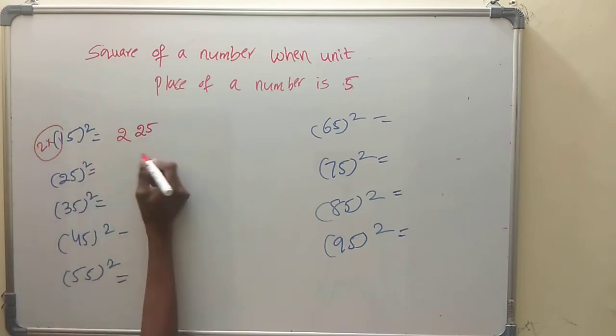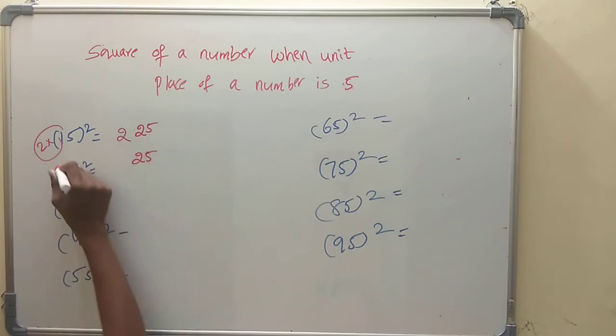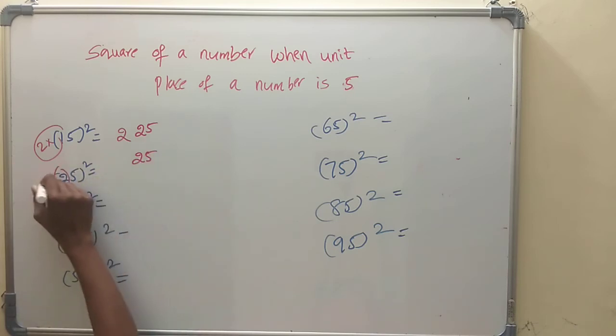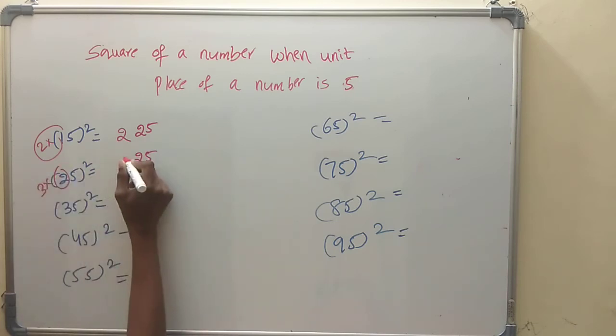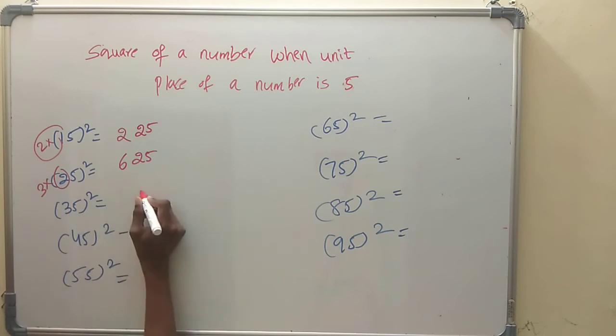So 15 squared: the tens digit is 1, next number is 2, 1 into 2 is 2, then append 25. Result: 225.